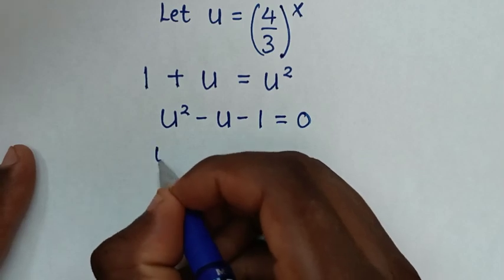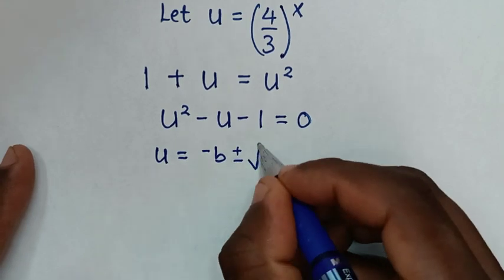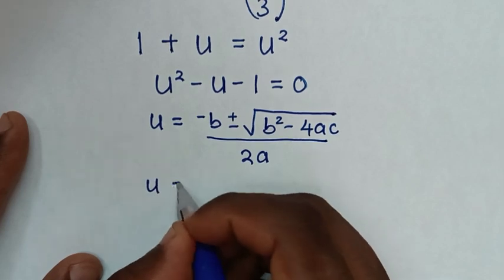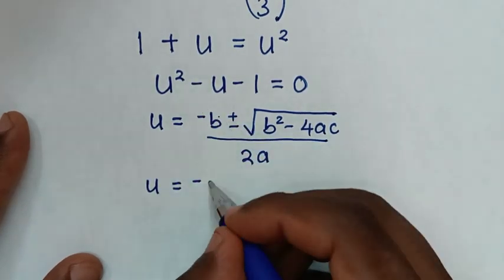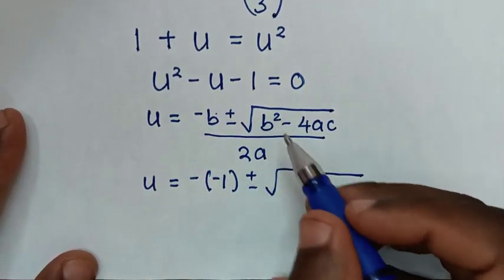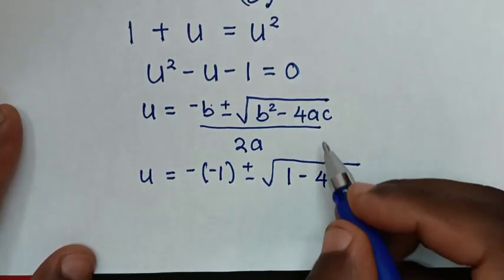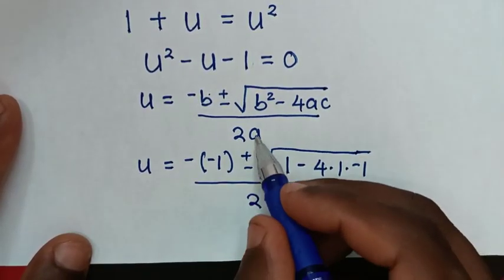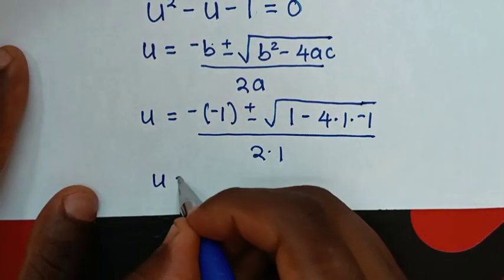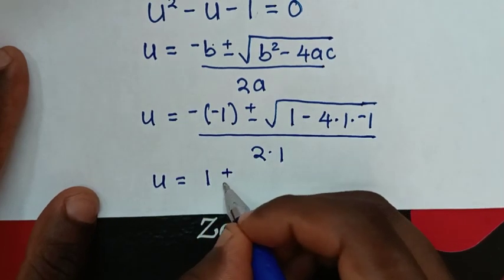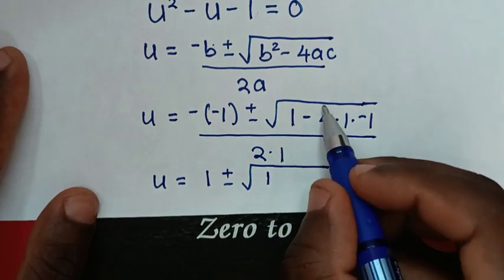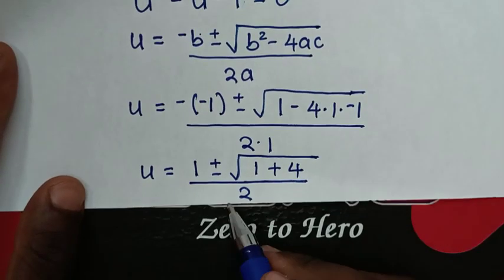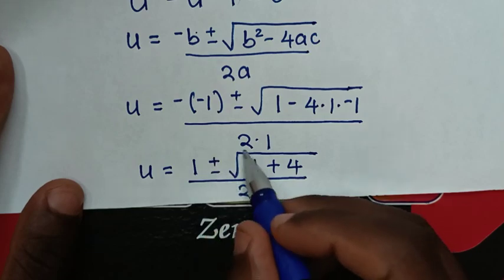To solve this quadratic equation we will use the quadratic formula: u equals negative b plus or minus square root of b squared minus 4ac, over 2a. So u equals negative b — b is negative 1, so positive 1 — plus or minus square root of negative 1 squared which is 1, minus 4 times a which is 1, times c which is negative 1, over 2 times a which is 1. Negative 4 times 1 times negative 1 is positive 4. So it becomes 1 plus or minus square root of 5, over 2.